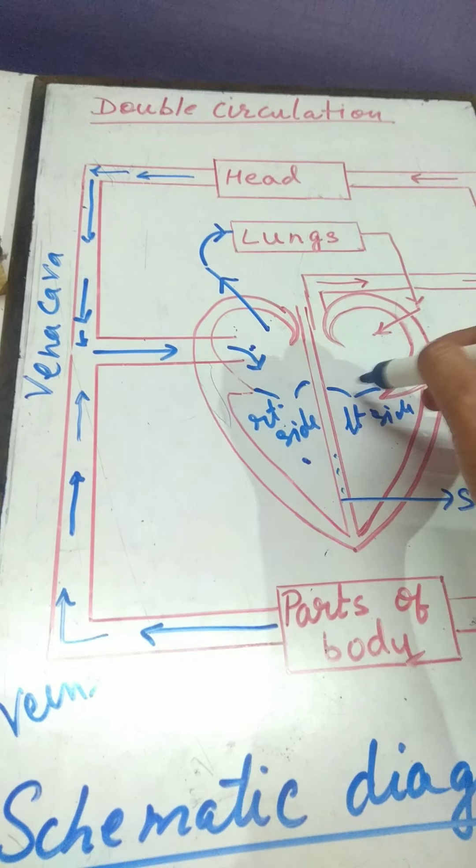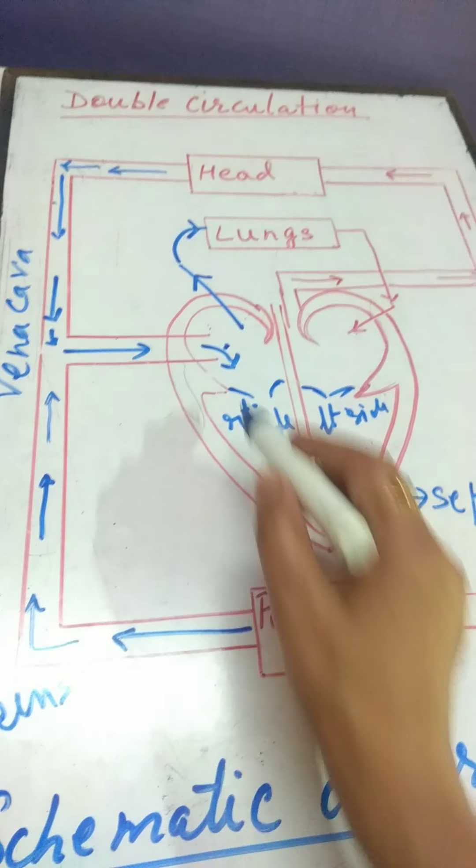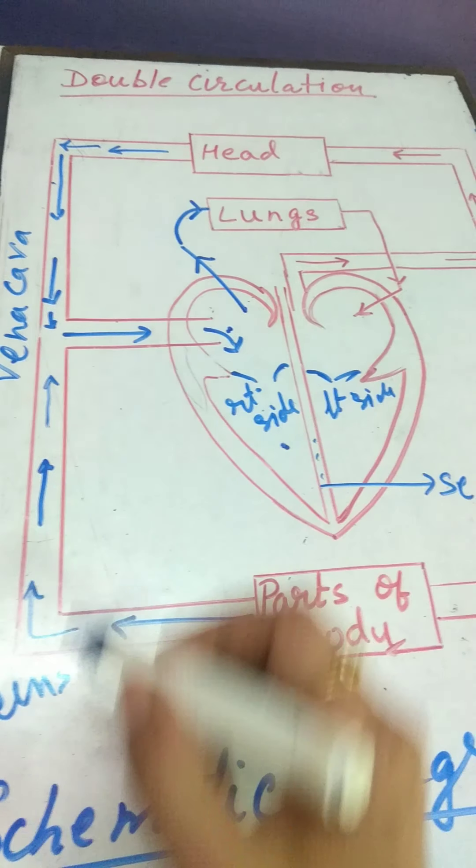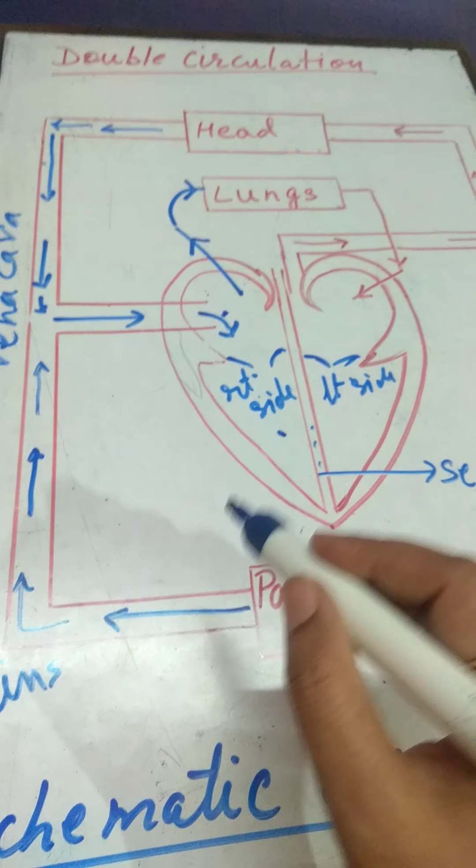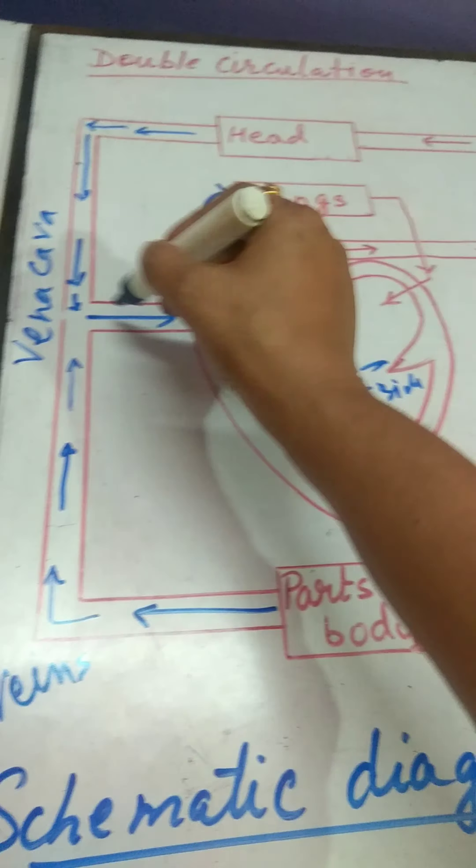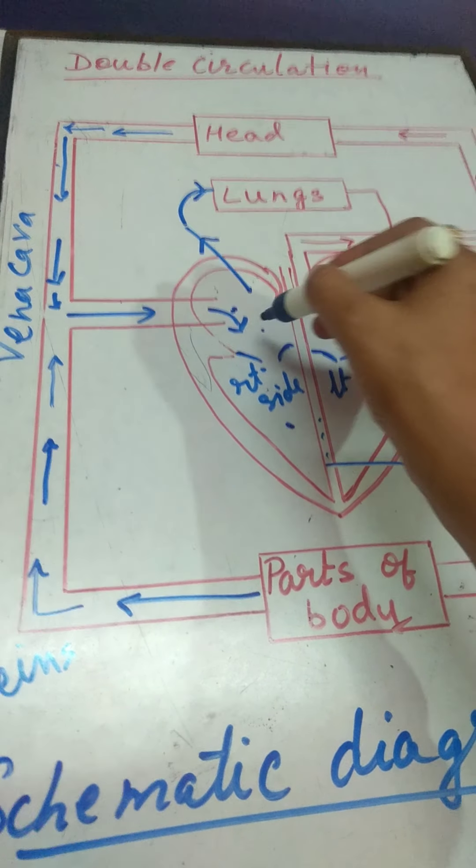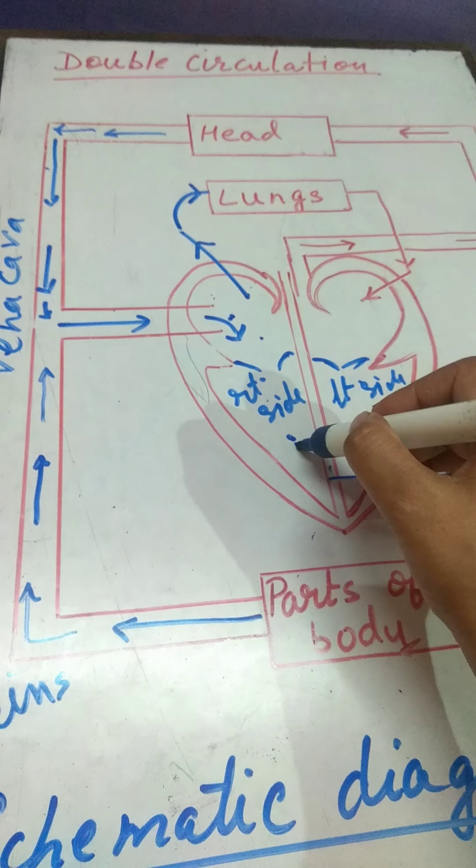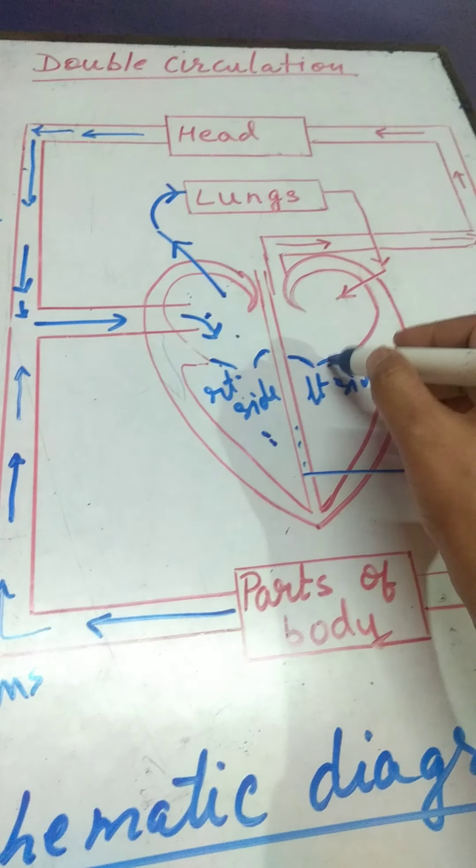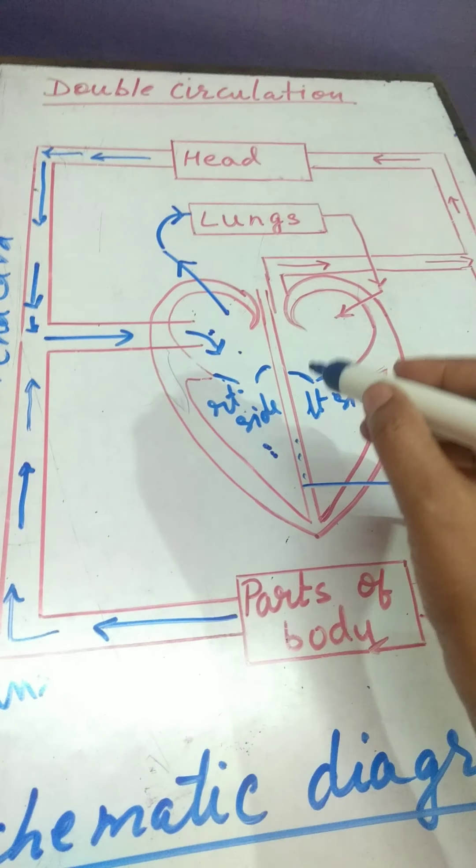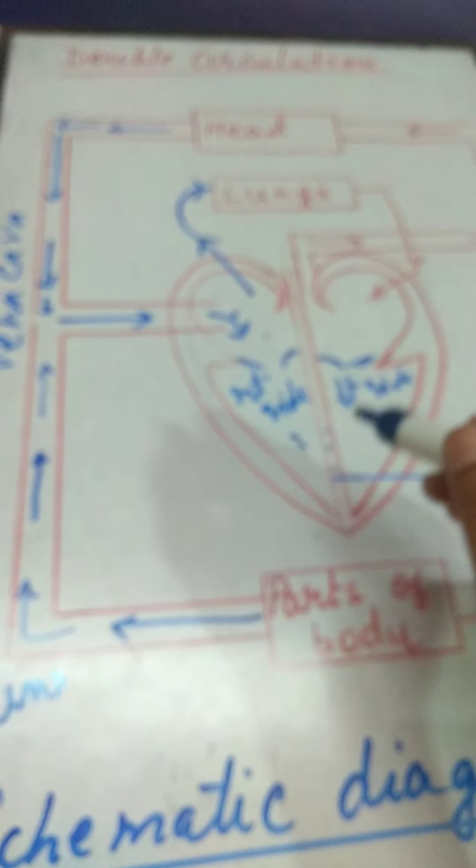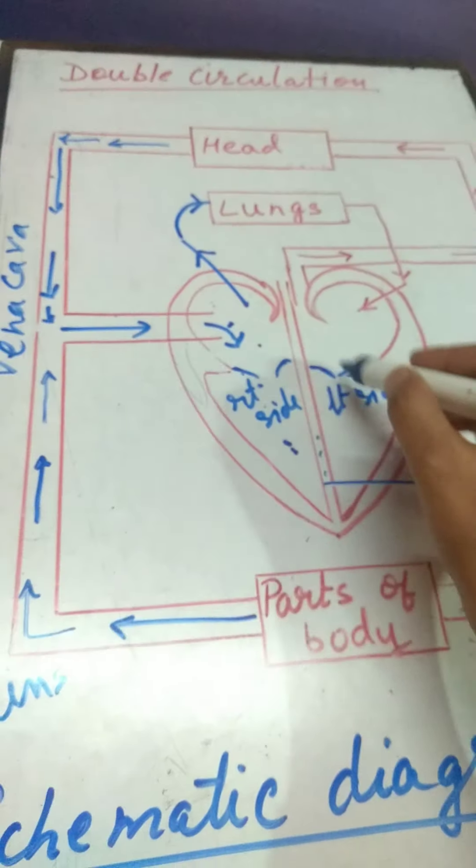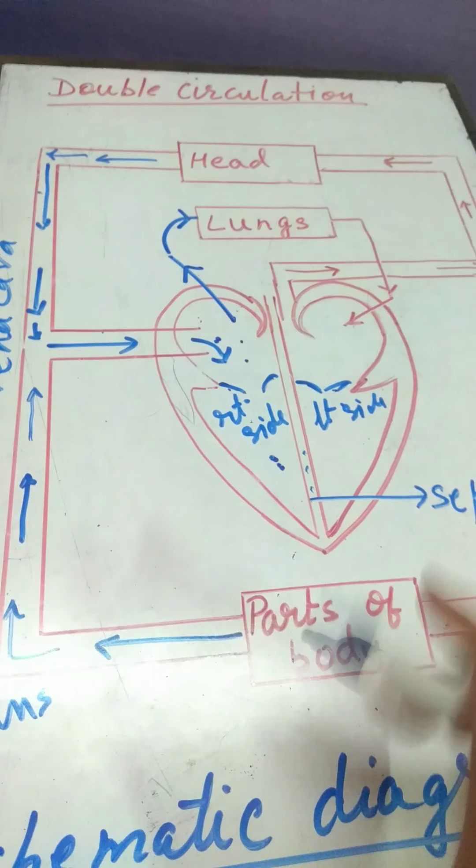See, here valves are present on both sides, right and left. What is the function of this valve? It prevents back flow. Back flow means once it enters from auricle to the ventricle, blood will never go back to the auricle from ventricle. So, these valves, bicuspid and tricuspid valve, these valves prevent back flow of blood.